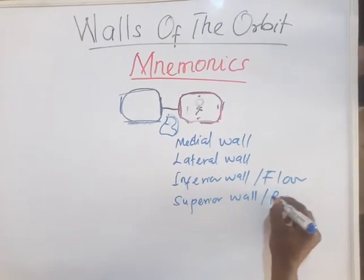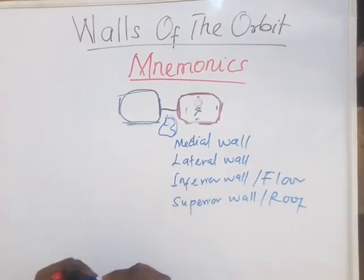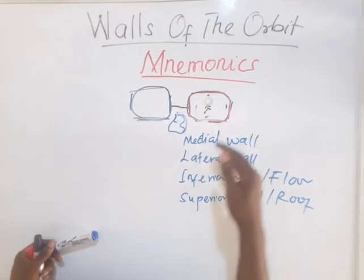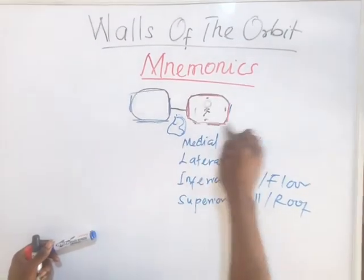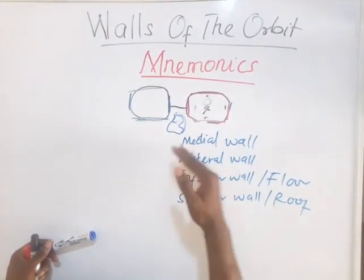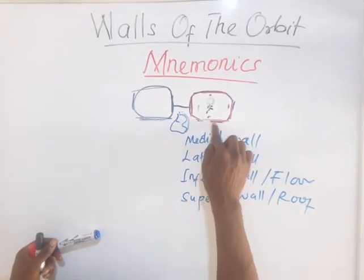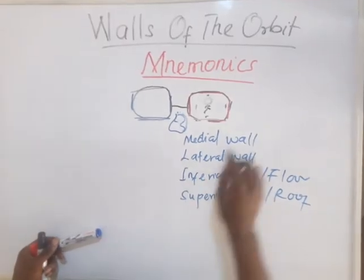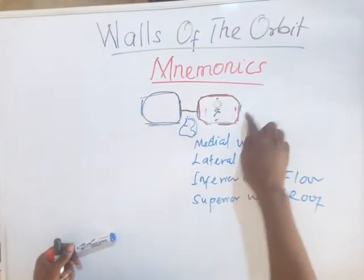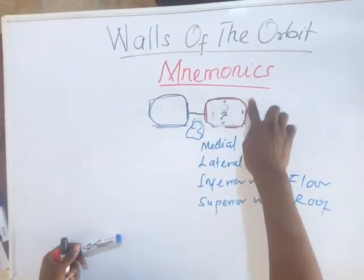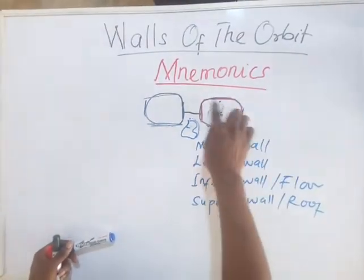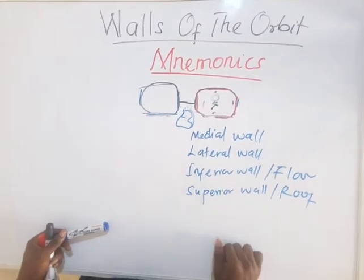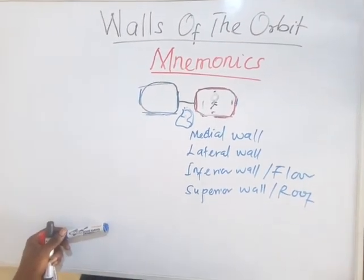Now the bones. As discussed in a previous video, we are talking about the bones forming these walls. Some bones form the floor of the orbit, some bones form the lateral wall of the orbit, and some bones form the roof of the orbit. It's a very simple mnemonic.